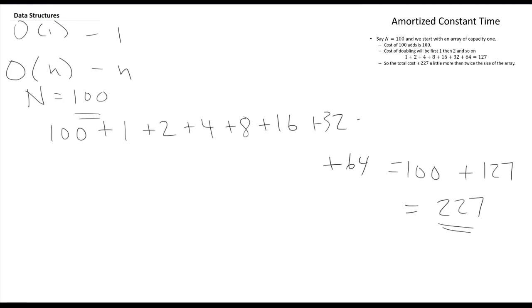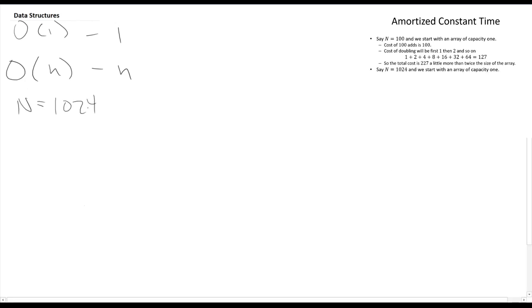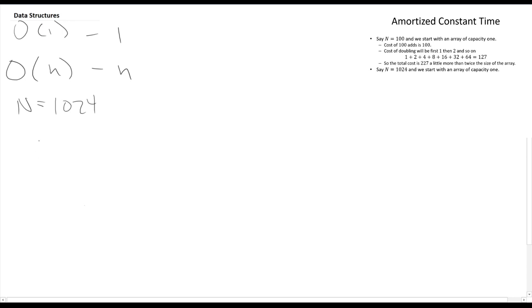Now I've chosen n equals 1,024 because it is a power of 2, which means after our doubling operations we will have grown to exactly 1,024. So after we do the 1,024th add, we will be completely full. We know we're going to have to still do 1,024 basic adds. Now I'm going to write the grow costs as a sum: from i equals 0 to i equals 9, of 2 to the i — because our last grow copies 512 elements (= 2 to the 9), since after that we have room for 1,024.